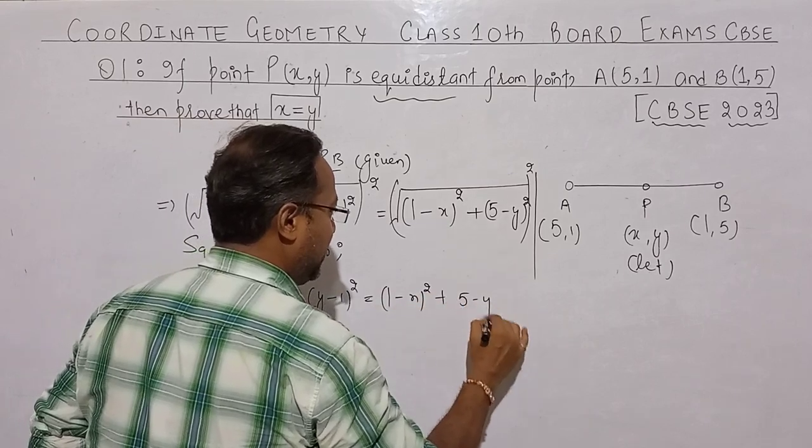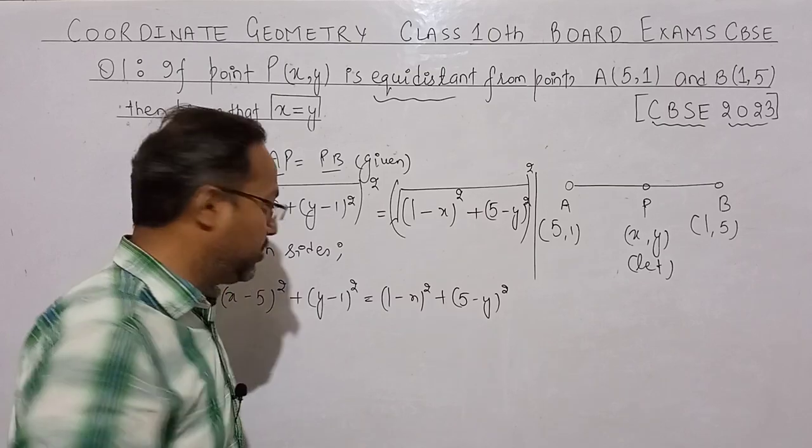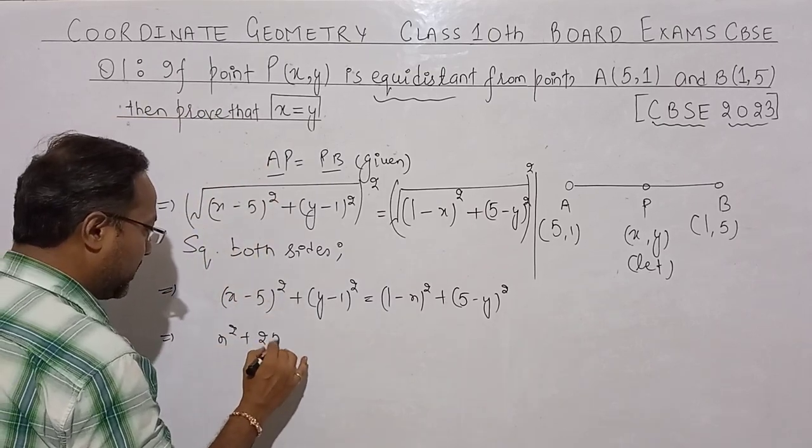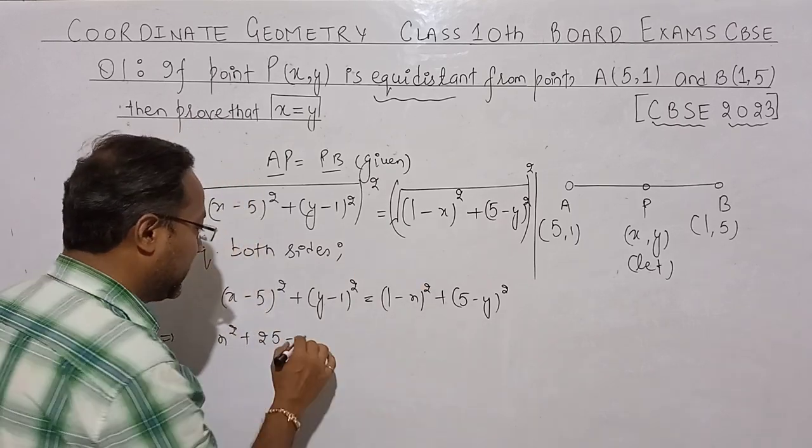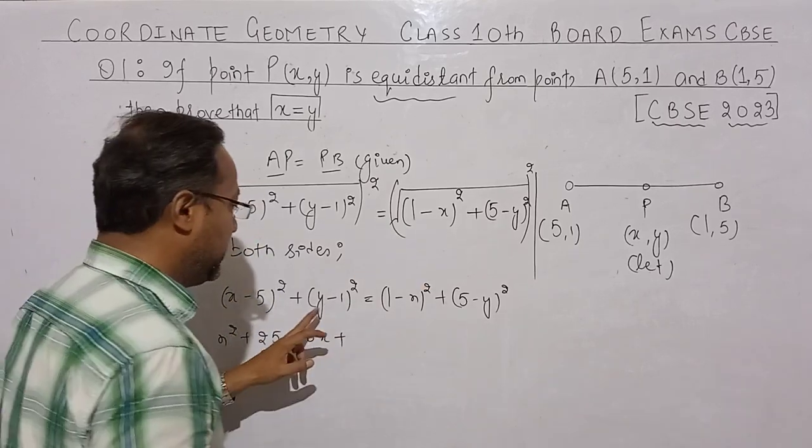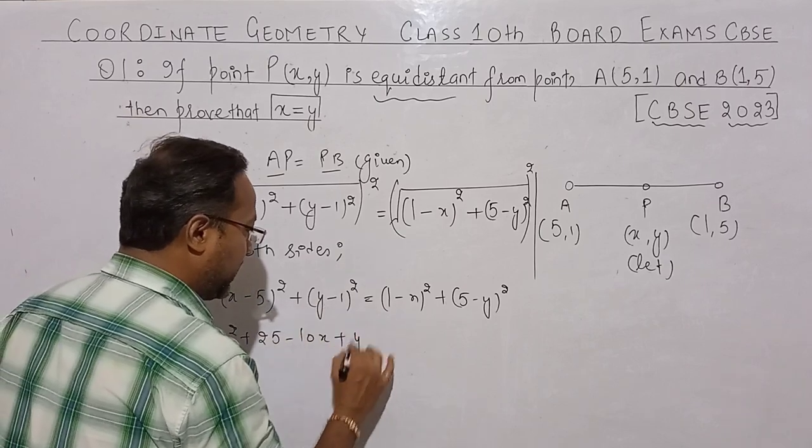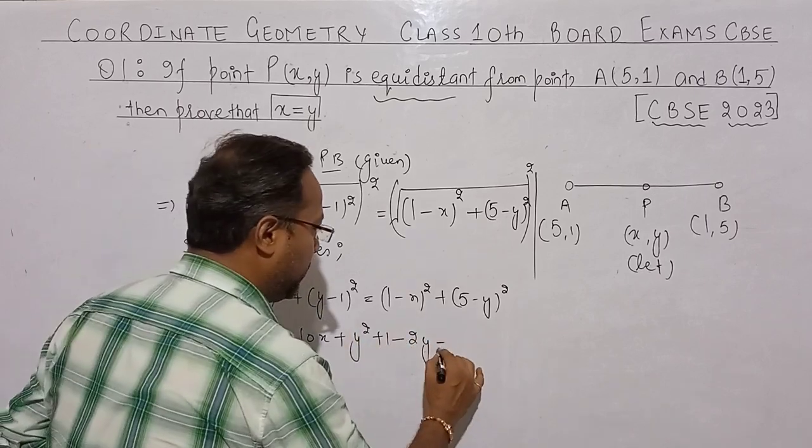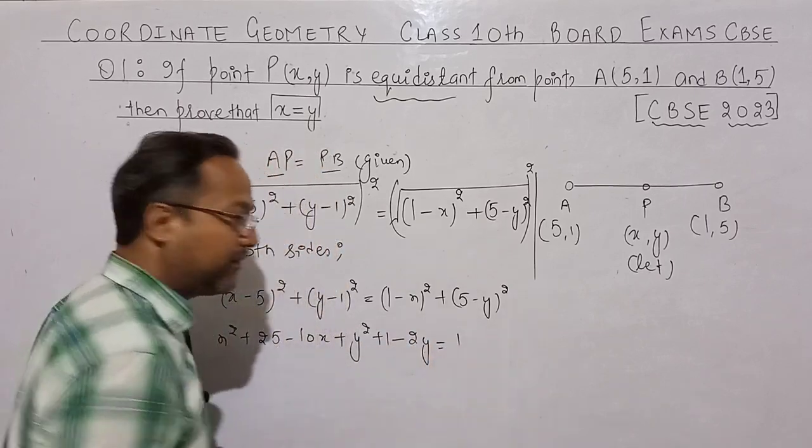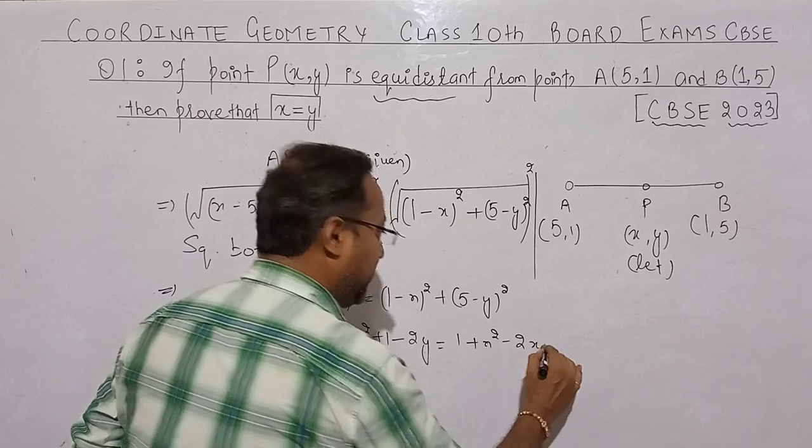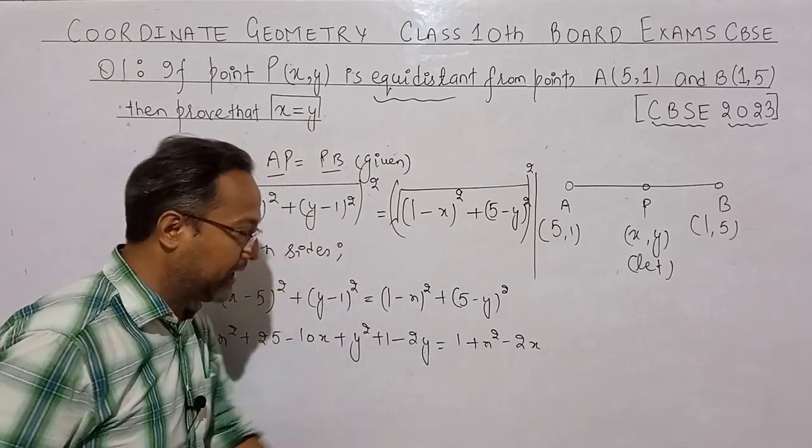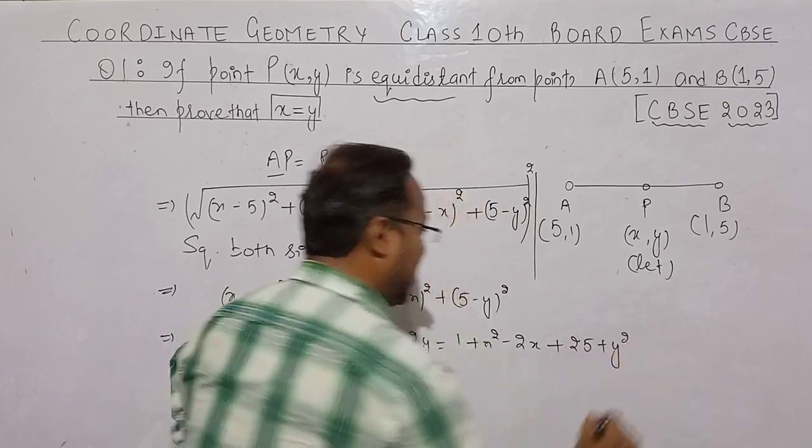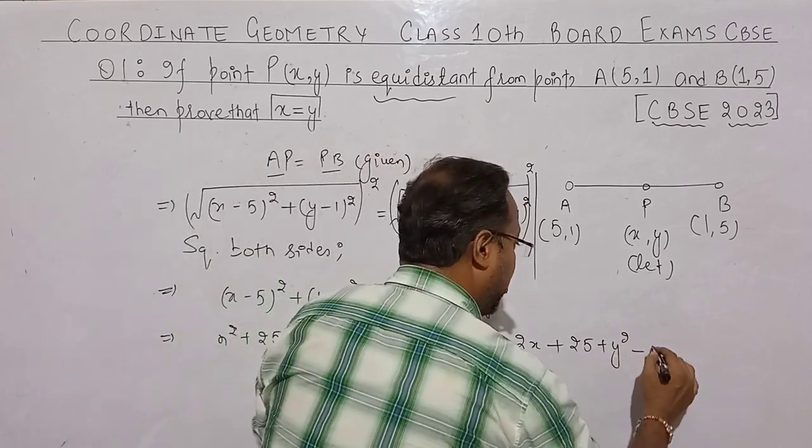Now let's open the formula a minus b whole square: a² plus b² minus 2ab. So x² minus 10x plus 25 plus y² minus 2y plus 1 equals 1 plus x² minus 2x plus y² plus 25 minus 10y.